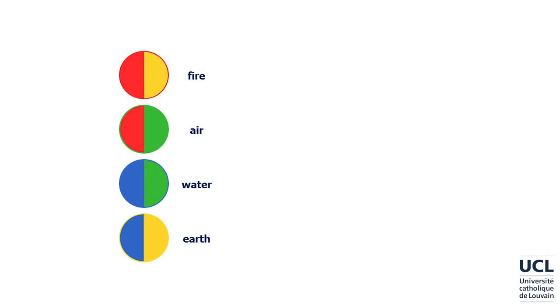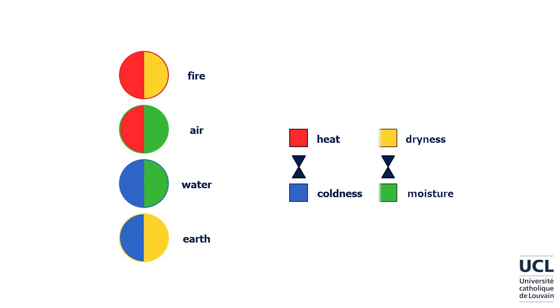It is by far the most influential. The elixir theory is based on a theory inherited from Greece: the theory of the four elements. Everything in the sublunary world is a compound of four elements — fire, air, water, and earth. Each of these principles is itself characterized by two of four elementary properties: fire is hot and dry, air is hot and moist, water is cold and moist, and earth is cold and dry.